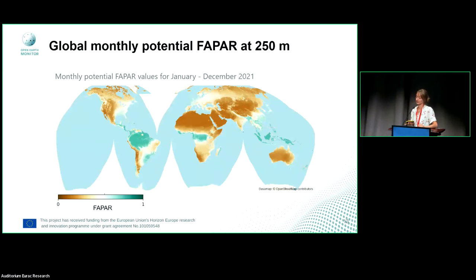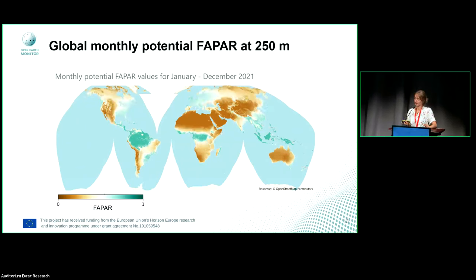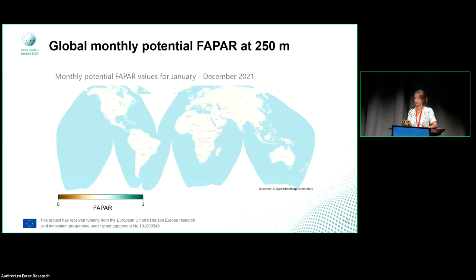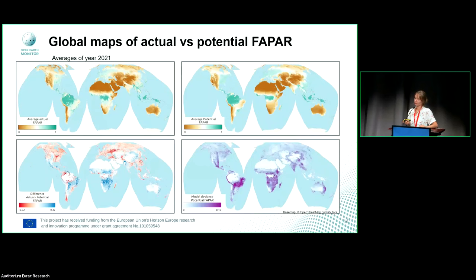Here you can see some global composites for the year 2021 — monthly imagery from January to December. You can see, especially in Europe, that the potential FAPAR changes with the seasons. From this, we have the actual FAPAR and the potential FAPAR, and from those we can of course calculate the gap between the two.